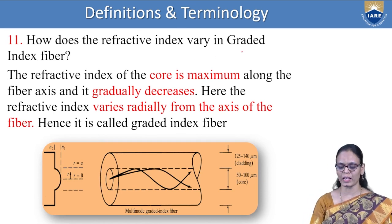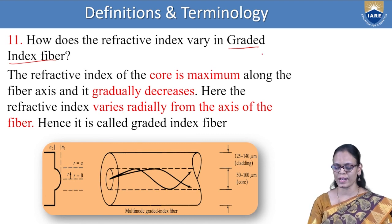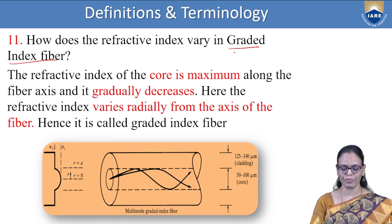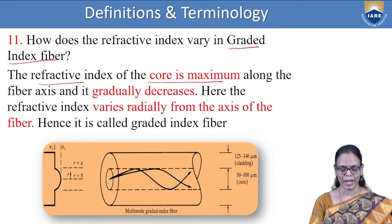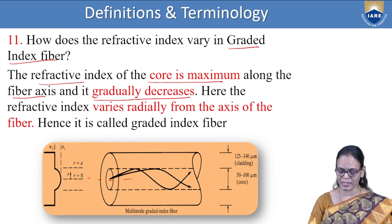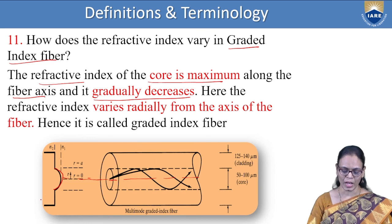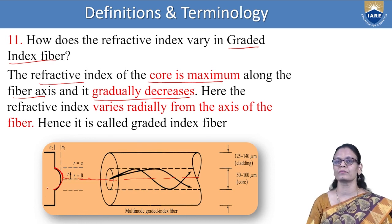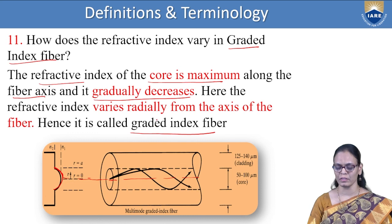How does the refractive index vary in a graded index fiber? In a graded index fiber, the refractive index of the core is maximum along the fiber axis and it gradually decreases towards the surface. The refractive index of the core is not uniform throughout — along the axis it is more and decreases gradually. It is graded — not uniform — the refractive index gradually decreases towards the surface.